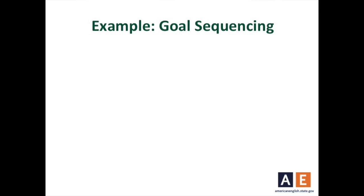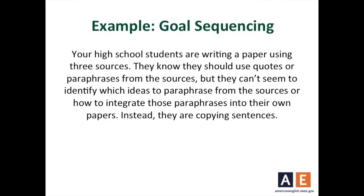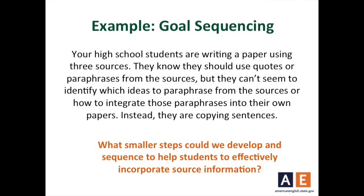Let's look at an example of breaking a large goal into smaller steps. Let's say that you have that same group of high school students who are now writing a paper using three sources. They know they should use quotes or paraphrases from the sources, but they can't seem to identify which ideas to paraphrase or how to integrate those paraphrases into their own papers. Instead, they're copying sentences. What smaller steps could we create to help the students?